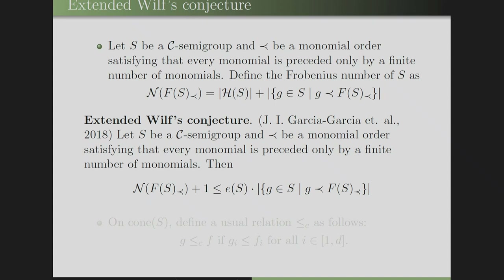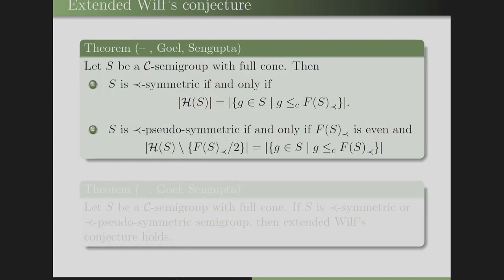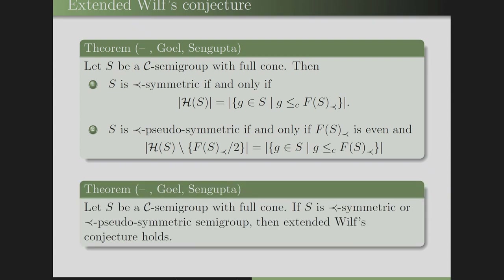For numerical semi-groups in the naturals, this reduces to the classical Frobenius number — the largest integer not in the semi-group — and the set of non-gap elements up to the Frobenius number. Let ≤_C denote the usual componentwise order on N^D, meaning G ≤_C F if all components of G are at most those of F. For C semi-groups with full cone, we prove that S is symmetric if and only if the cardinalities of two related sets are equal, and pseudo-symmetric if and only if the corresponding cardinalities are equal. Using these characterizations, we prove that the extended Wilf's conjecture holds for sigma-symmetric and sigma-pseudo-symmetric semi-groups.